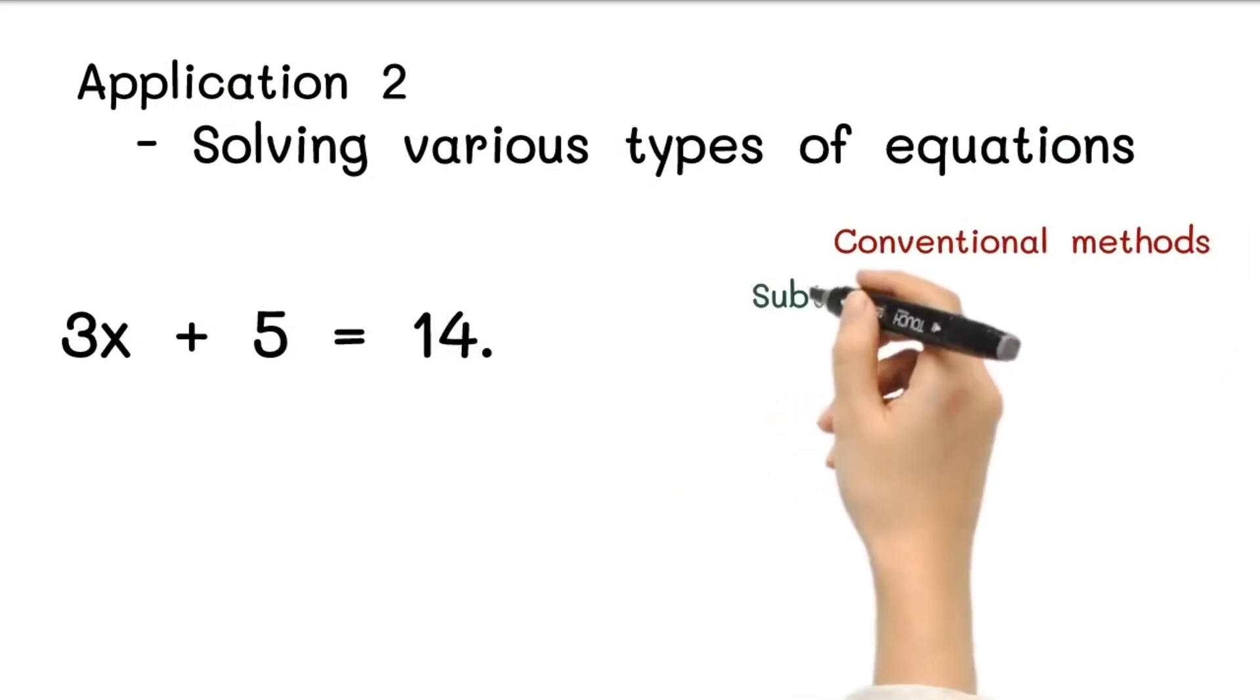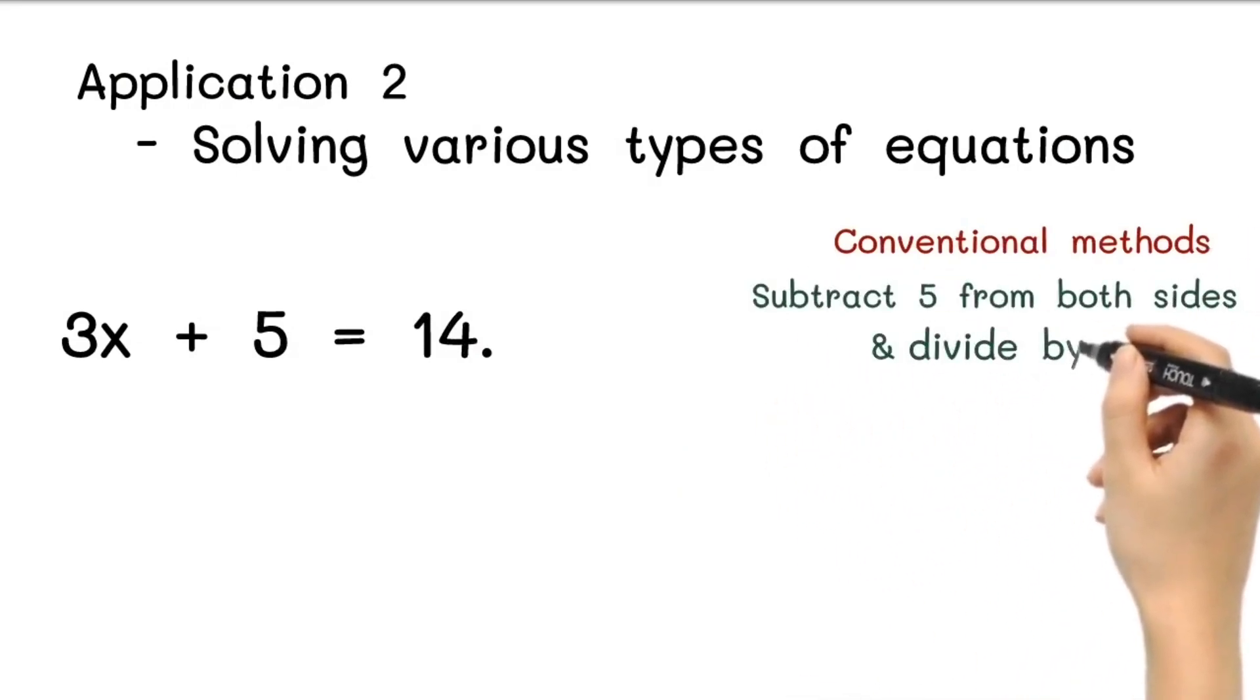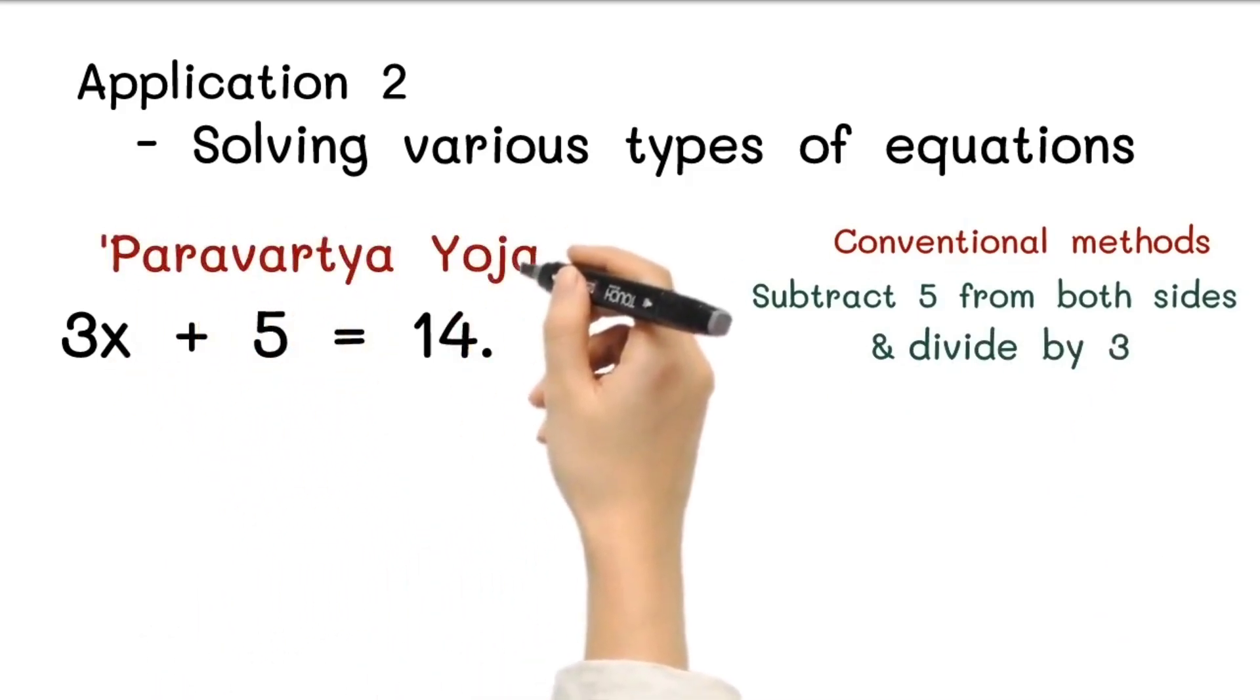Using conventional methods, we would subtract 5 from both sides and then divide by 3. But with Paravartya Yojayet, we can streamline this process.